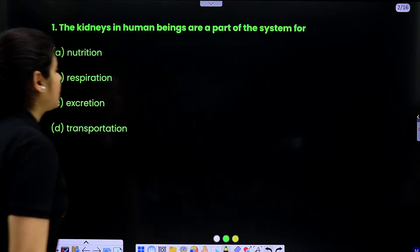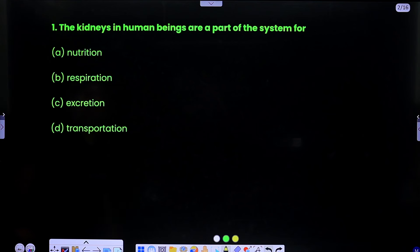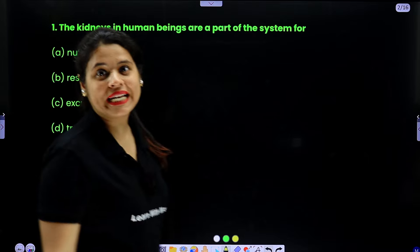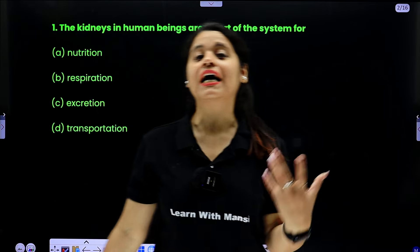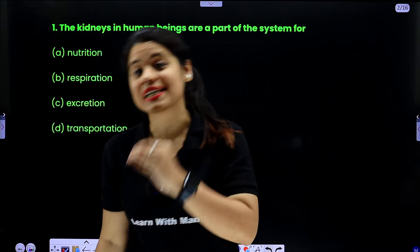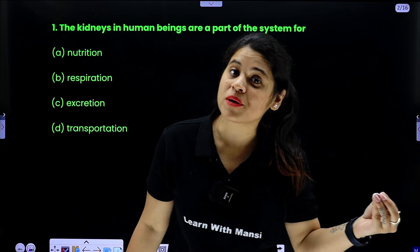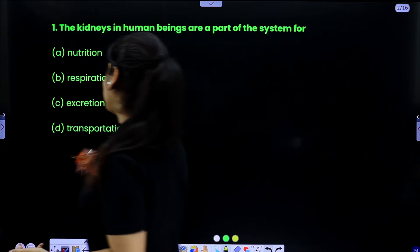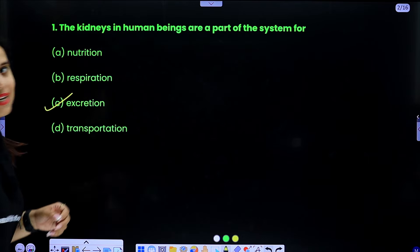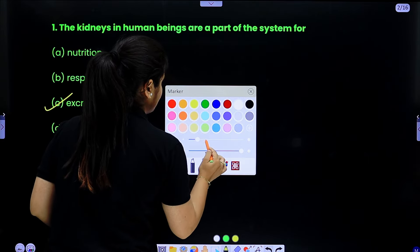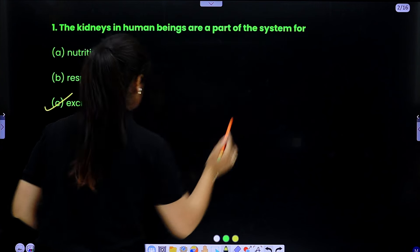First of all, question number 1 is: the kidney in human beings are a part of which system? Which system did we study our kidney in? The kidney is part of the excretory process — it is part of the excretory system.